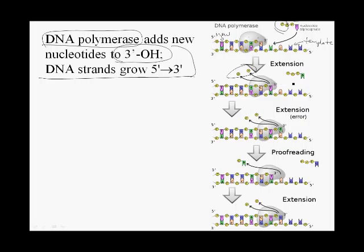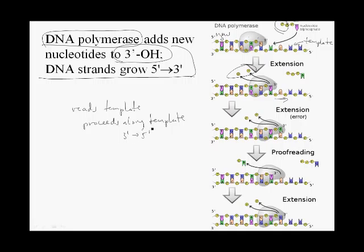DNA polymerase reads the template from the 3' to 5' direction — moving from left to right. It reads the template 3' to 5' and makes DNA 5' to 3', because the resulting duplex has to be anti-parallel.